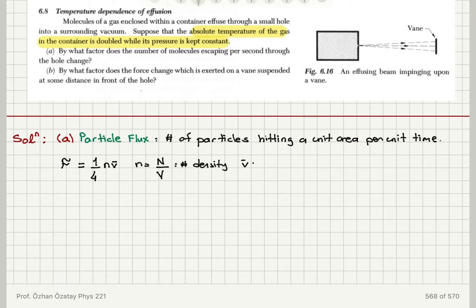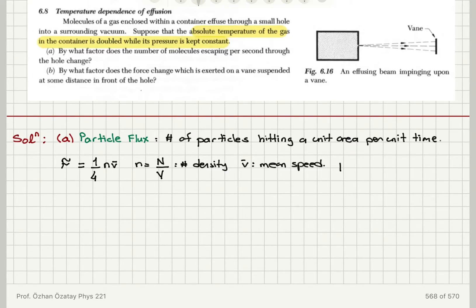Here n is the total number of particles divided by volume — the number density — and v̄ is the mean speed of the molecules. This question asks what happens when, under constant pressure, the temperature is doubled. So I need to look at the behavior of n and v̄ to determine what will happen to the particle flux.